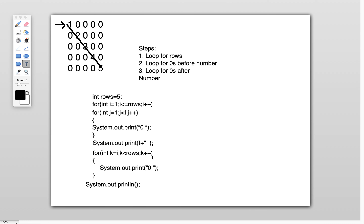So this is how it works: the first loop (i-loop) is for rows; the second loop (j-loop) prints zeros before the number; then I print the value of i for the diagonal number; the third loop (k-loop) prints zeros after the number. Three loops total are needed for this pattern.